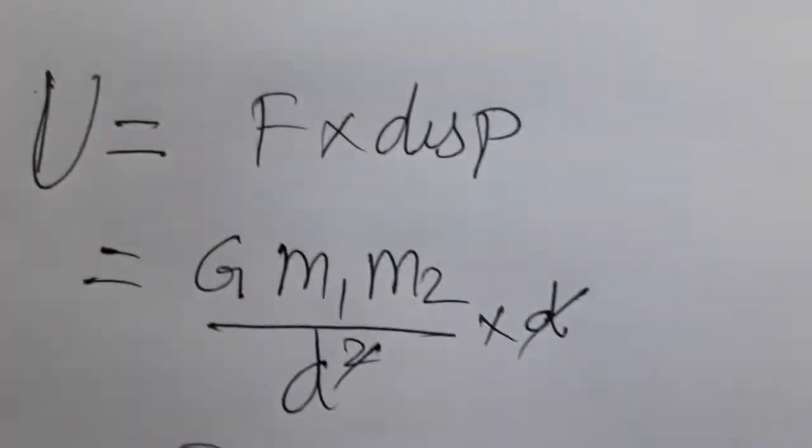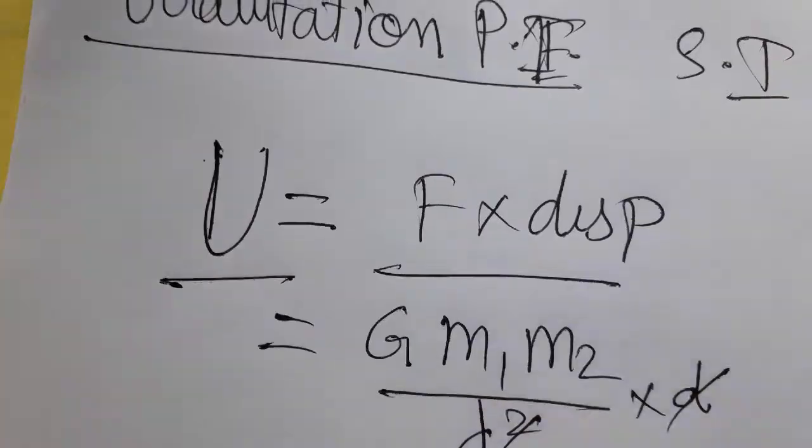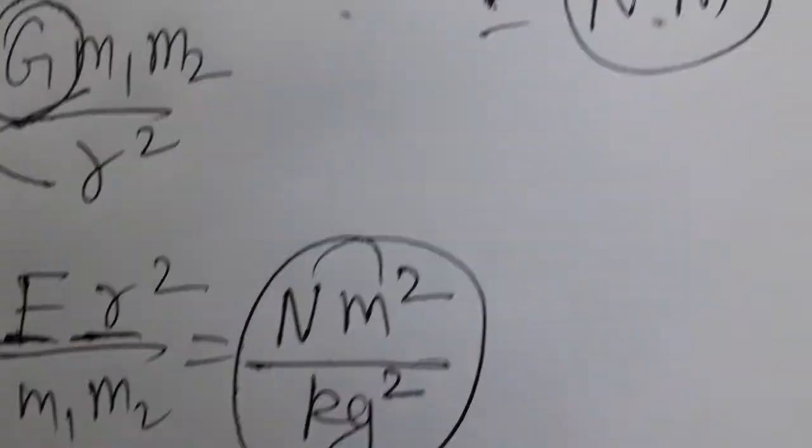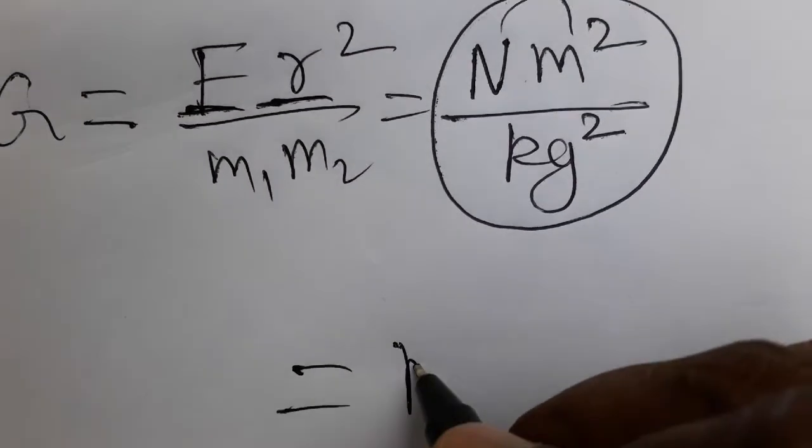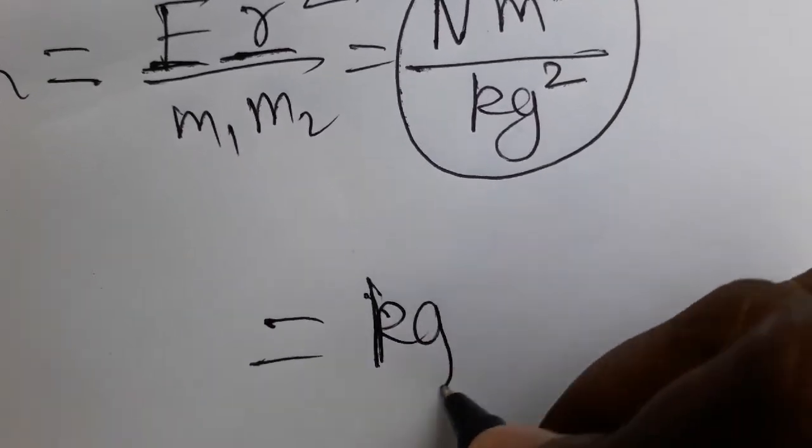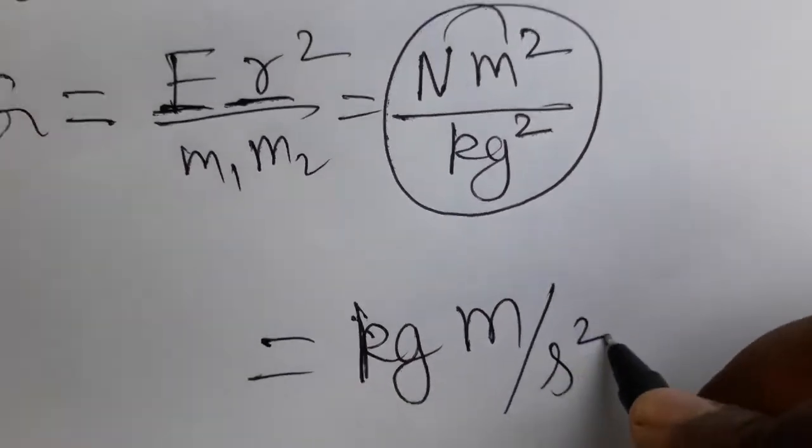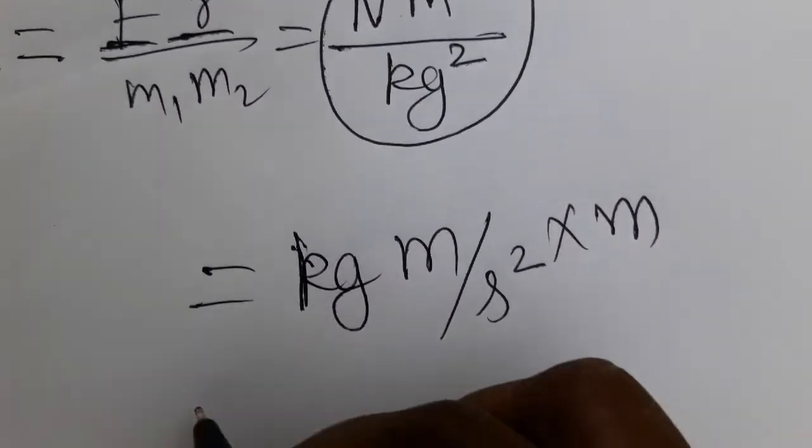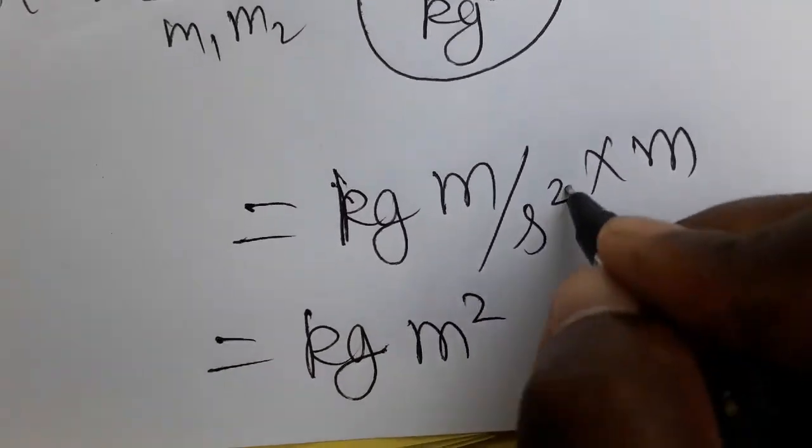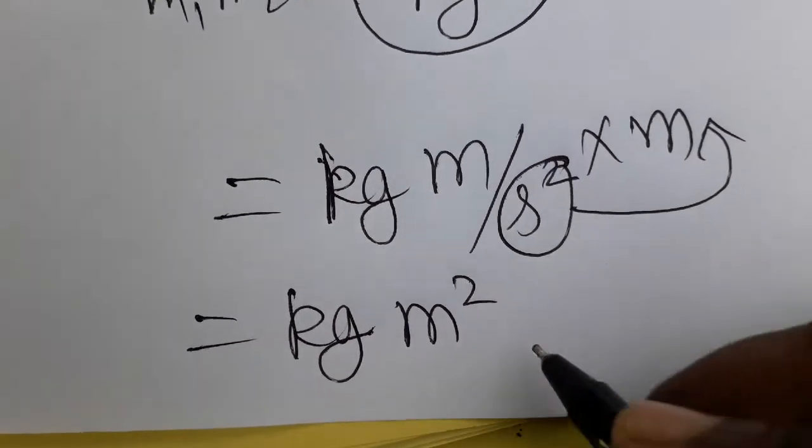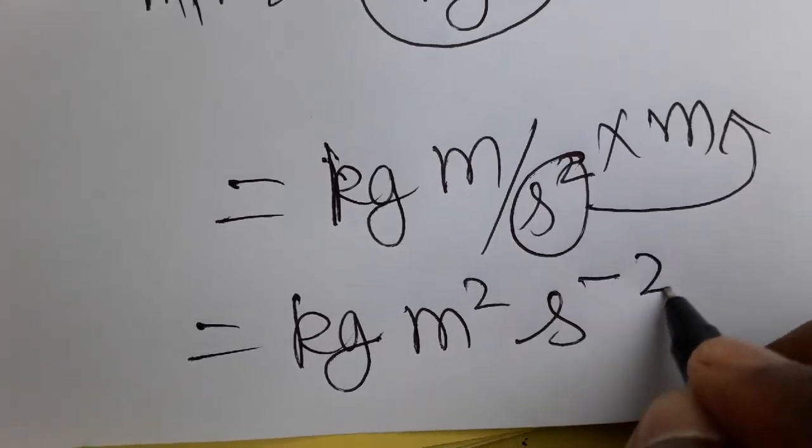Newton meter - what is newton? Newton is mass into acceleration. Mass into acceleration is kg meter per second squared into meter, which is meter squared. We get kg meter squared per second squared. From denominator I've taken as numerator, so plus sign I'm changing to minus sign.